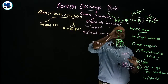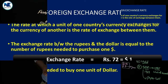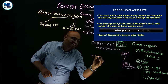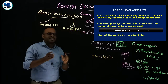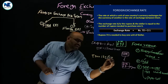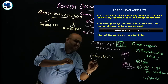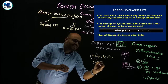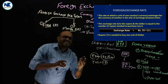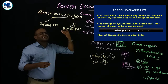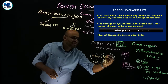Just like the price of one kilogram of rice might be 30 rupees, similarly the price of one US dollar is 72 rupees. So the foreign exchange rate is like a price — the price of one unit of foreign currency in terms of home currency. The American dollar is priced at 72 rupees. This is the logic to analyze the exchange rate.